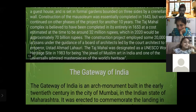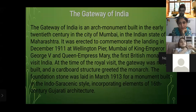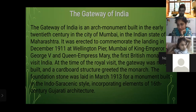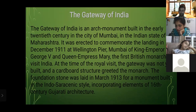The second featured place is the Gateway of India. It is an arch monument built in the early 20th century in Mumbai, Maharashtra. It was erected to commemorate the landing in December 1911 at Wellington Pier, Mumbai, of King-Emperor George V and Queen-Empress Mary — the first British monarchs to visit India. At the time of the royal visit the gateway was not yet built and a cardboard structure greeted the monarchs. The foundation stone was laid in March 1913 for a monument built in the Indo-Saracenic style, incorporating elements of 16th century Gujarati architecture.